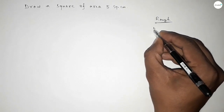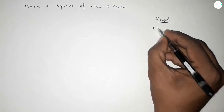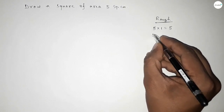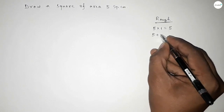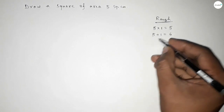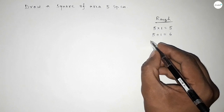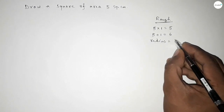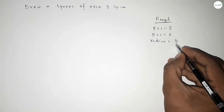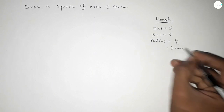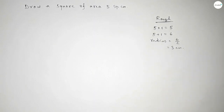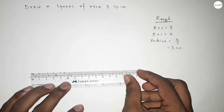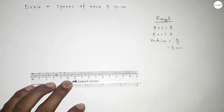So now 5 plus 1 equal to 6. So we have to draw a semicircle with radius 3 centimeters. First, we have to draw a length of 6 centimeters, which is the diameter of the semicircle.